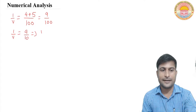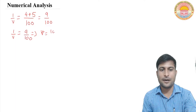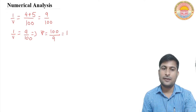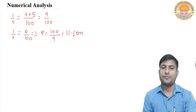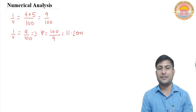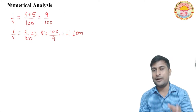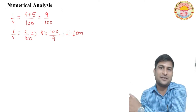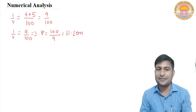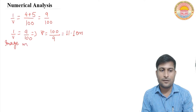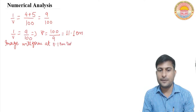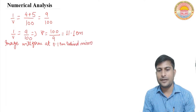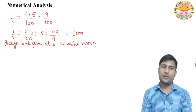Therefore v equals 100 upon 9, which is approximately 11.1 cm. The value of v is positive, which means the image forms on the right side — behind the convex mirror, at the reflecting surface's back. So: image will form at 11.1 cm behind the mirror.